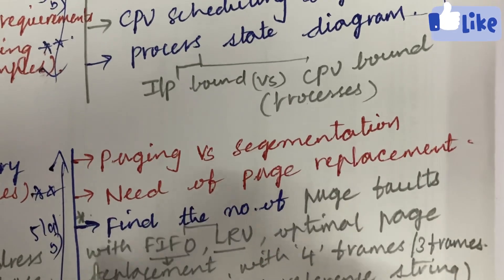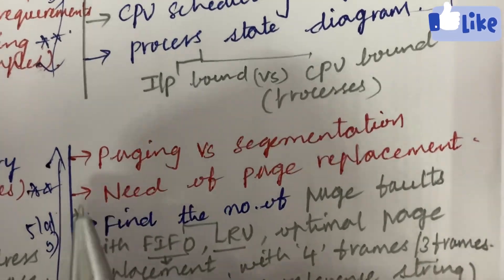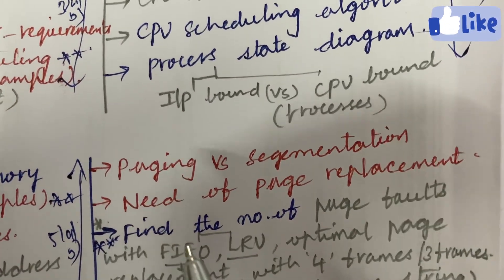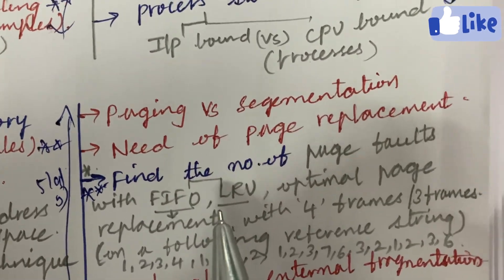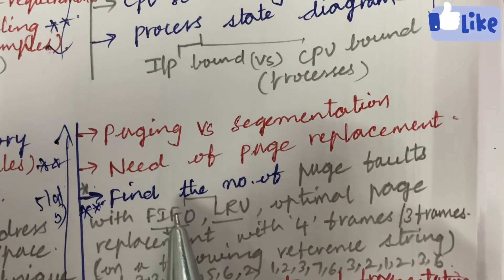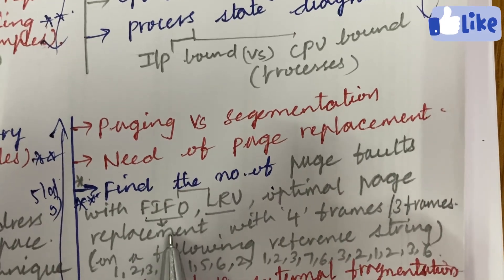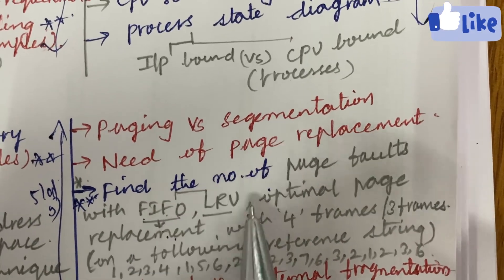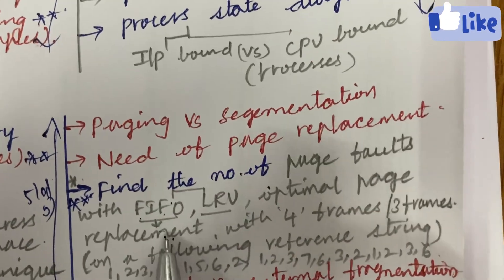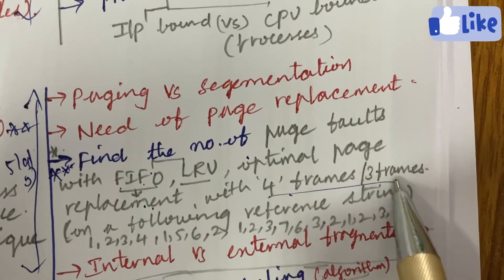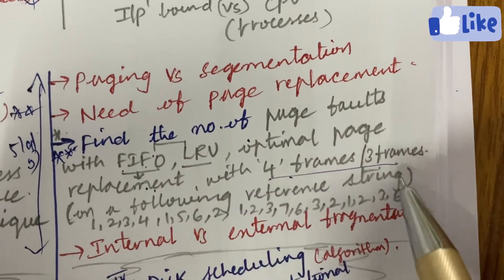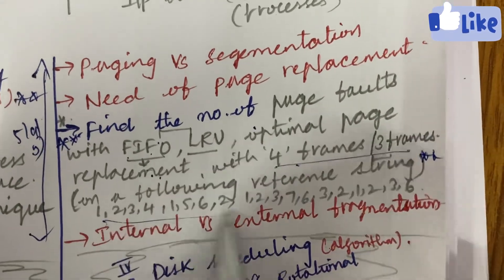Explain the differences between paging and segmentation and need of page replacement. There may be one problem related to this working out, a compulsory one-shot question for sure, a 15 mark direct question: find the number of page faults with FIFO, LRU, optimal page replacement. They'll be asking you to work out the differences, as well as the replacement with four frames and five frames on a following reference string.